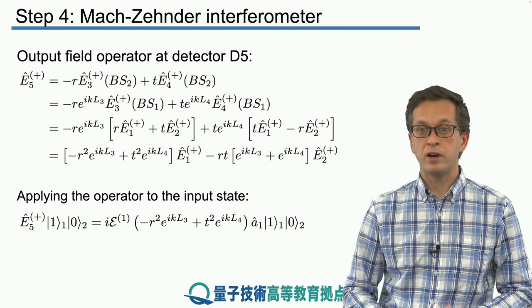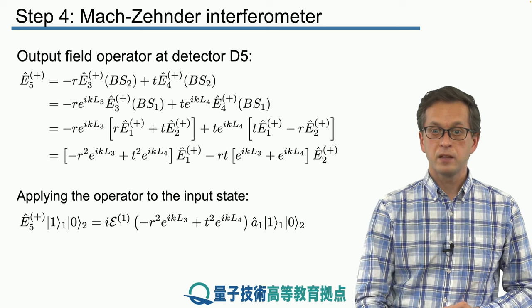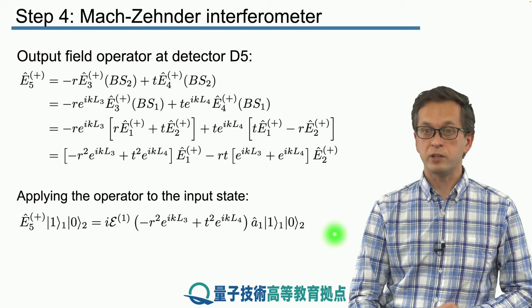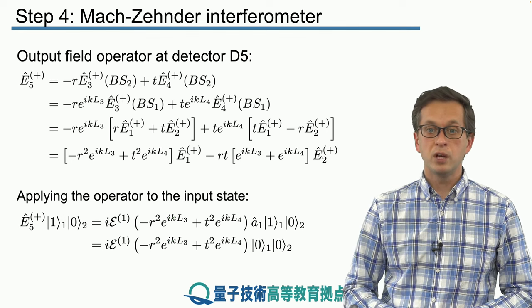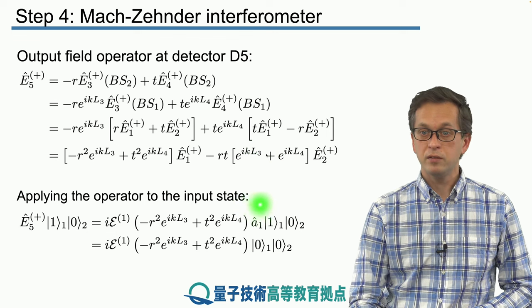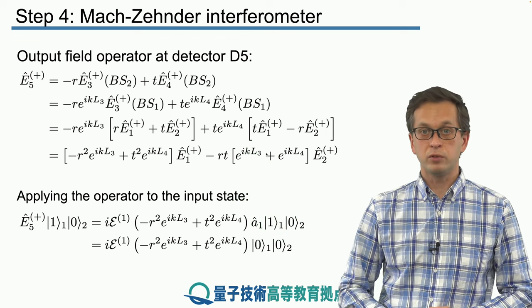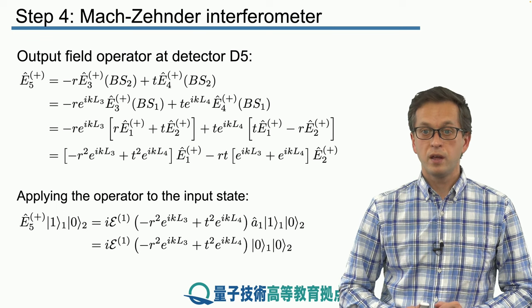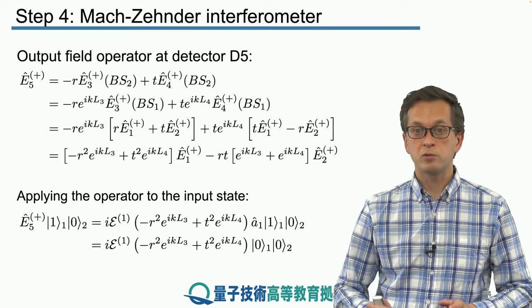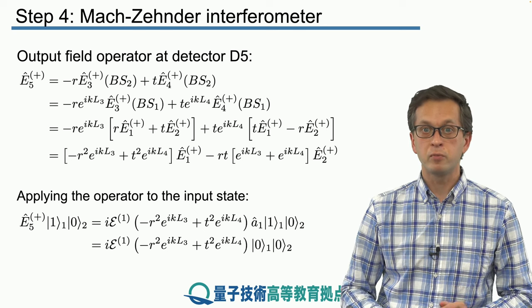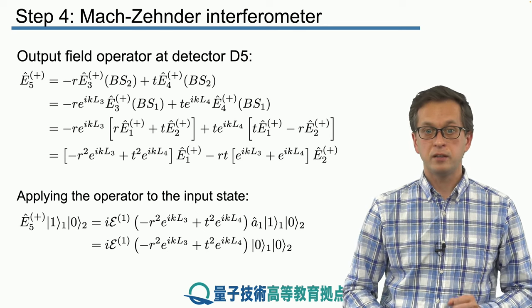So E5 applied to our input state gives us this following expression. And now what we want to do is we want to apply this A1 to the one photon state in mode 1, so that will give us vacuum. And now we are ready to compute the modulus squared of this expression in order to obtain the formula for W1 at the detector 5.